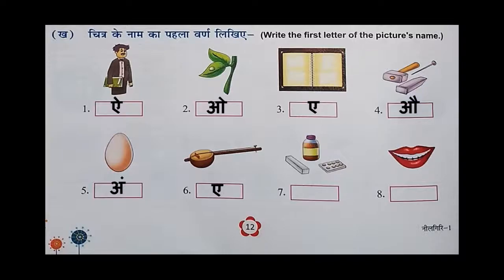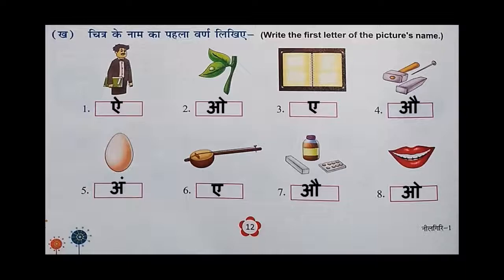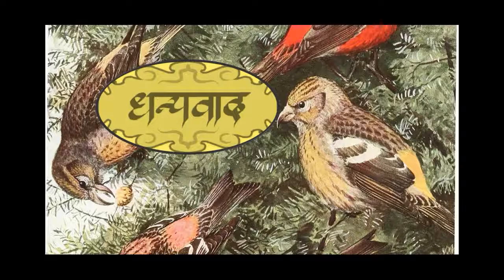Medicines. What is medicines in Hindi? Aushadi — au se Aushadi. So you have to write Au in the seventh picture. And the eighth one is au se Aunt, so you have to write Au in the eighth box. We have completed the second exercise also. Dhaniabad bachon.